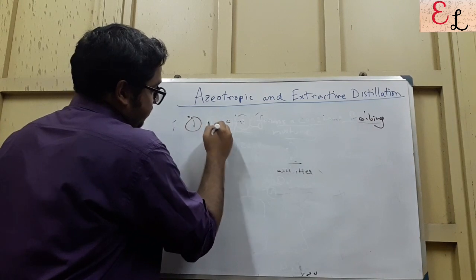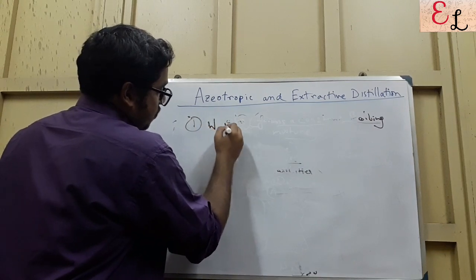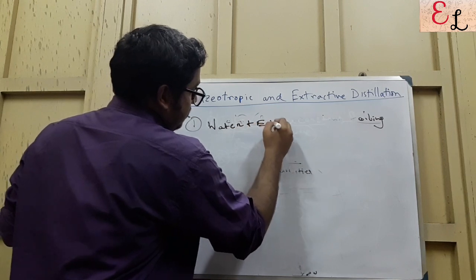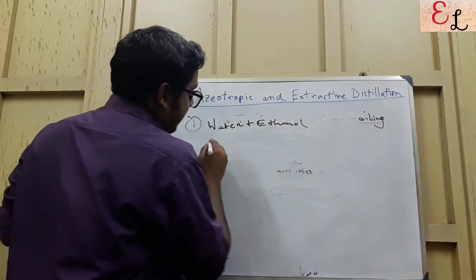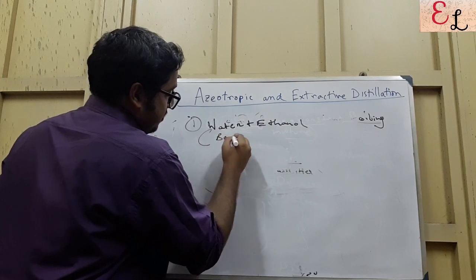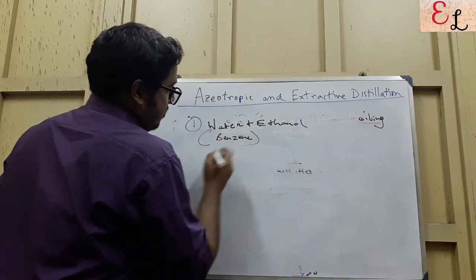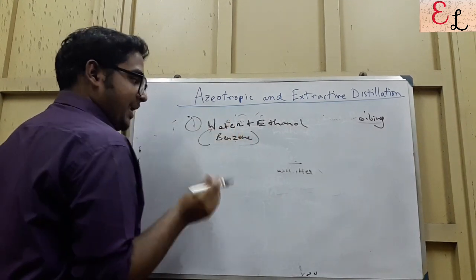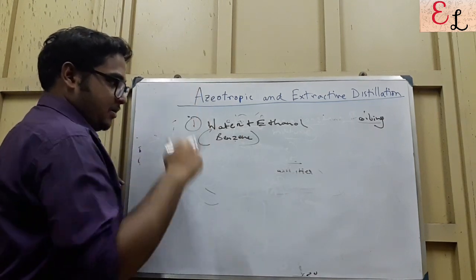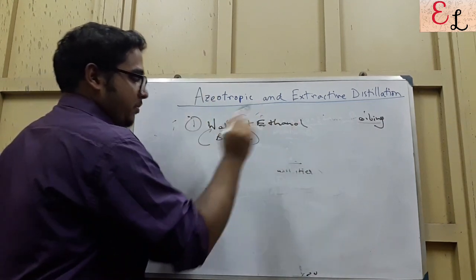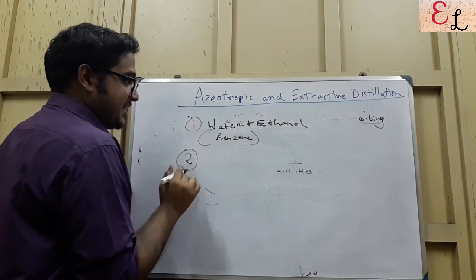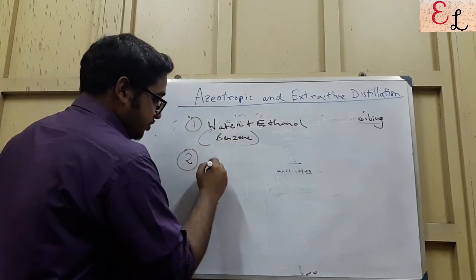An example of azeotropic distillation: water plus ethanol, with the entrainer being benzene. Benzene and water combine with each other to form an azeotrope, going to the top, while ethanol is collected from the bottom.